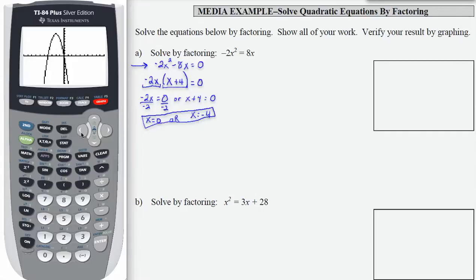So I'm going to use my second calc intersect, which is number 5 process. That's going to give me the first solution, the intersection 0, 0. So this x equals 0 has been confirmed.